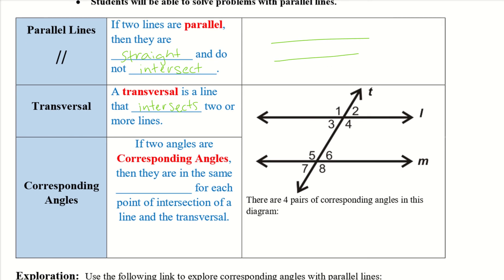If two angles are corresponding angles, then they are in the same position for each point of intersection of a line and the transversal. So if we take a look at angle one, angle five is in the same exact position on the other line. So one and five would be corresponding angles. We also have three and seven, two and six, and four and eight.